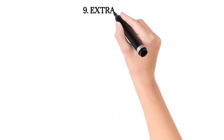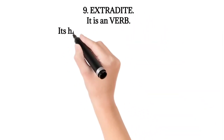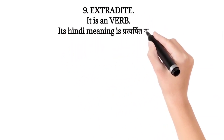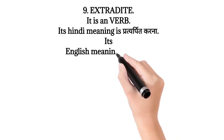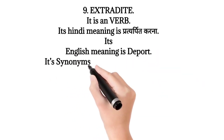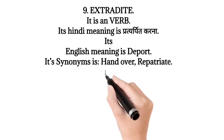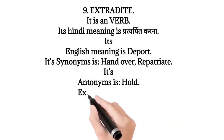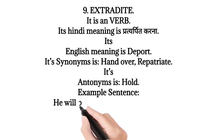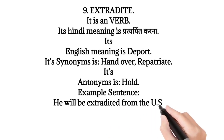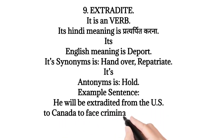9. Extradite — it is a verb. Its Hindi meaning is 'pratiyarpit karna'. Its English meaning is 'deport'. Its synonyms are hand over, repatriate. Its antonym is hold. Example sentence: He will be extradited from the US to Canada to face criminal charges there.